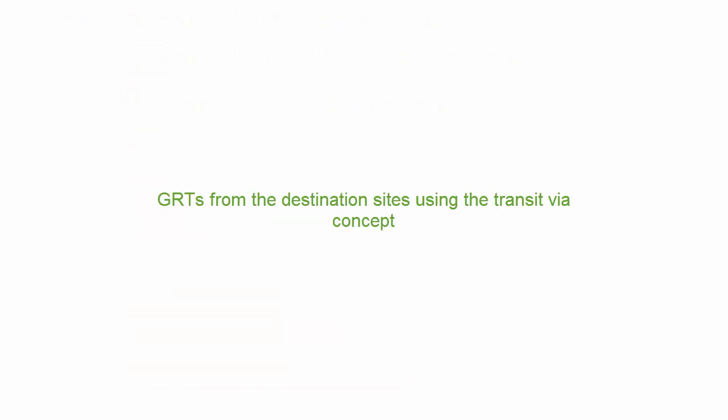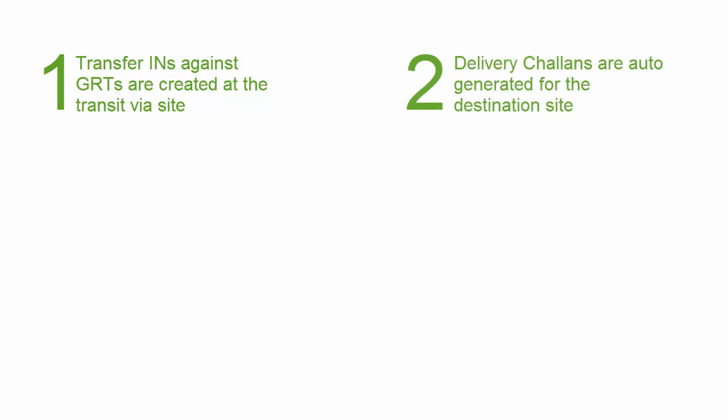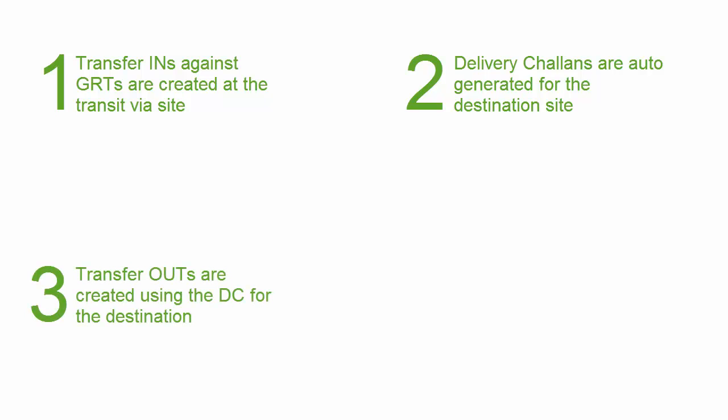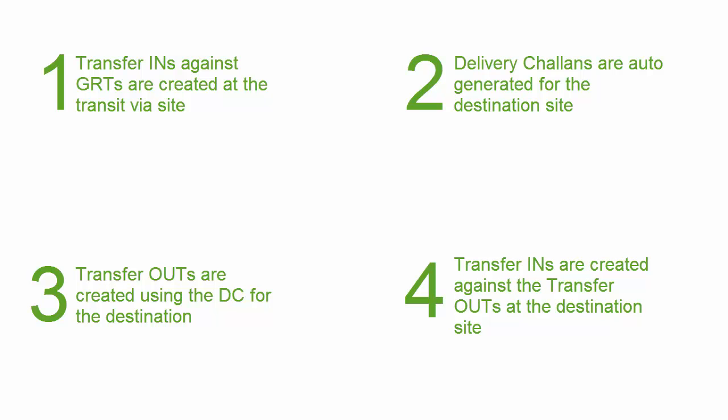In case of GRTs from the destination sites, the stores or other sites follow a similar process to return the goods via a transit via site. Transfer ins are created in the transit via site against the GRT. This automatically creates the delivery chalan for the destination sites. Transfer outs are created using the auto-generated delivery chalan for the destination site, and at the destination site a transfer in is created against the transfer out.